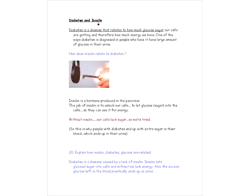Okay, so again, let's talk a little bit about the connection between diabetes and insulin. So, how does diabetes relate to insulin? Well, first of all, insulin is a hormone produced in the pancreas. The job of insulin is to unlock our cells to let glucose or sugar into the cells so the cells can use it for energy. Now, without insulin, our cells lack sugar, so we're tired. And this is why people with diabetes end up with extra sugar in their blood, which then ends up in their urine. Because it's not used in the cell, therefore they have an excess of it in the bloodstream, rather, I should say.